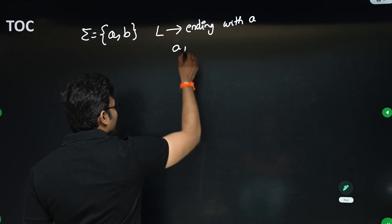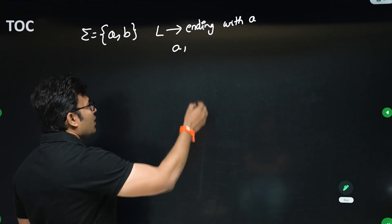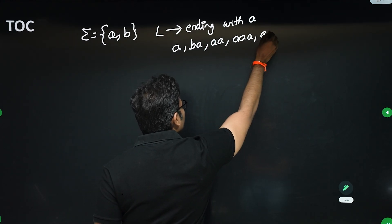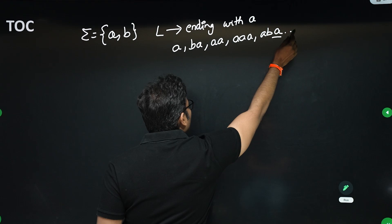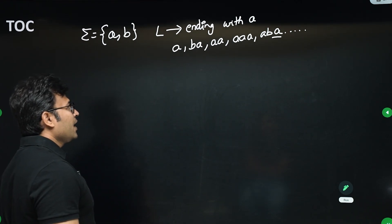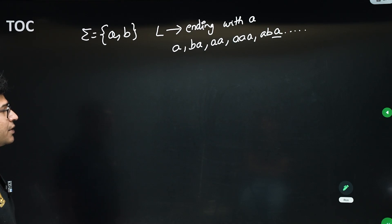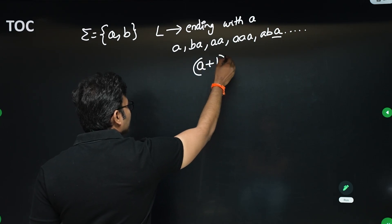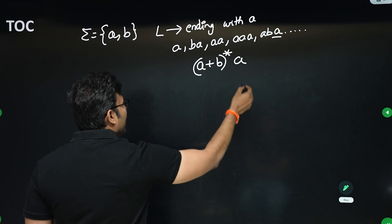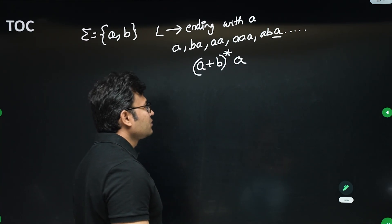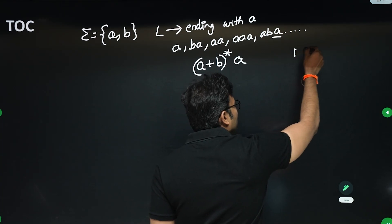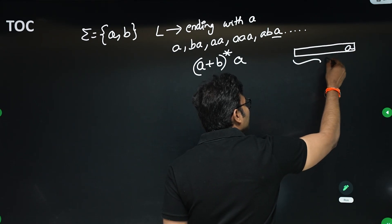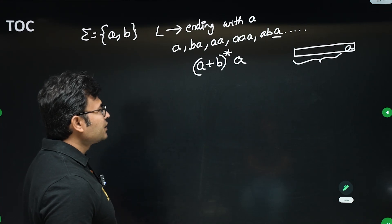So 'a' is in the language, epsilon cannot be in the language. 'ba', 'aa', 'aaa', 'aba' can all be in the language — basically all strings ending with 'a'. Writing a regular expression for this is very simple: initially anything can come, and we end it with 'a'. At the beginning there can be any a's or b's, so the regular expression is (a+b)*a.